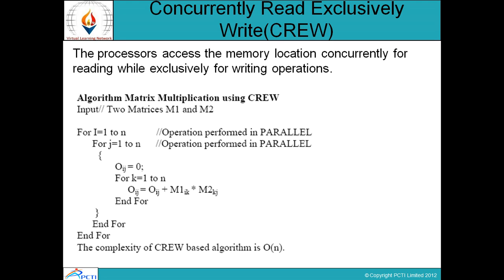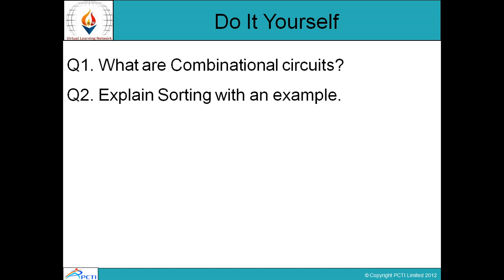Next is concurrently read and exclusively write (CREW). The processors access the memory locations concurrently for reading while exclusively for writing operations — reading is concurrent but writing is exclusive. The algorithm runs a loop for i, then j, initializes O[i][j] to 0, then runs a loop for k and stores the value in O[i][j], then ends the loops. That's all for this session, thank you and have a nice day.